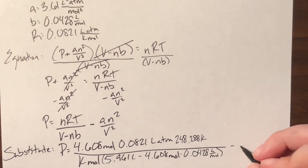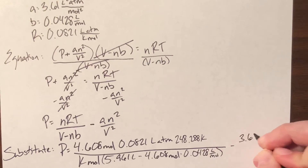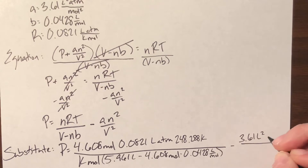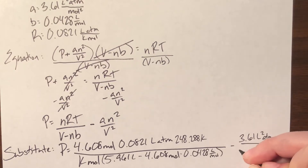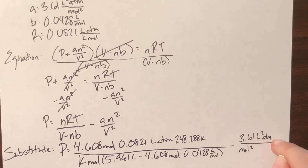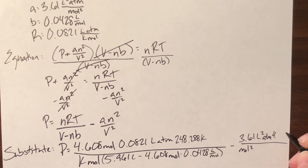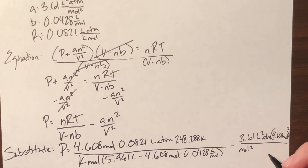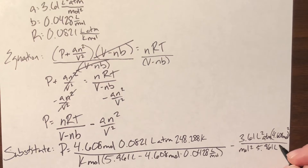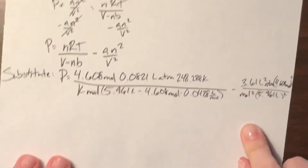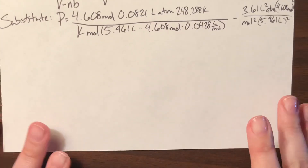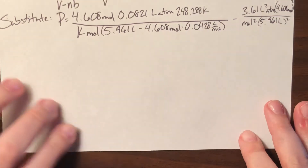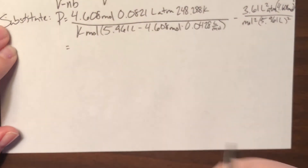Then I subtract A, which was 3.61 liters squared atmospheres per moles squared, multiplied by N squared, where N was 4.608 moles squared, divided by my volume squared, which was 5.961 liters squared. Since we have so much to deal with here, I am going to do it slowly and show you exactly how these values are going to end up canceling.